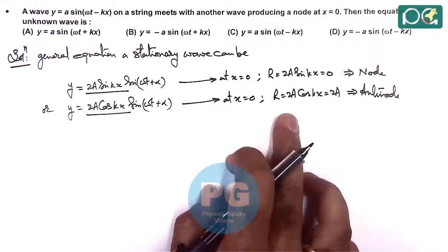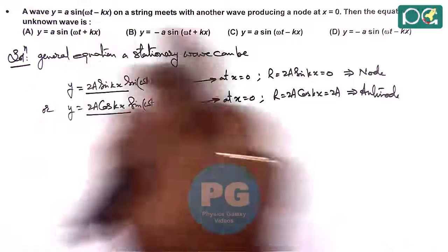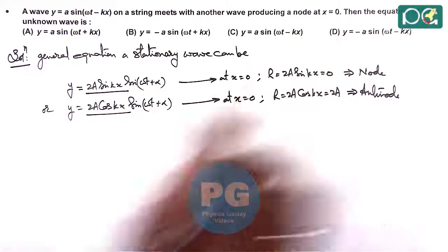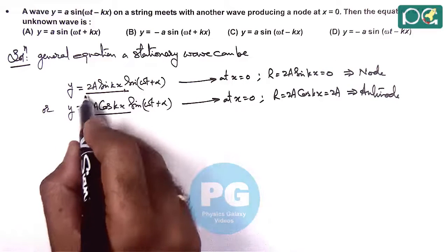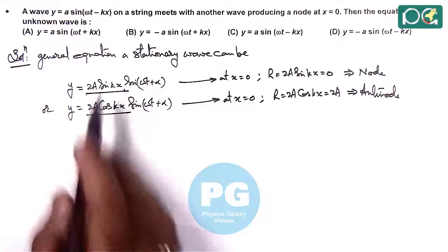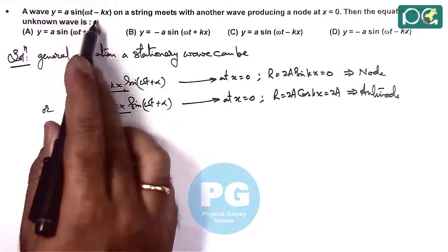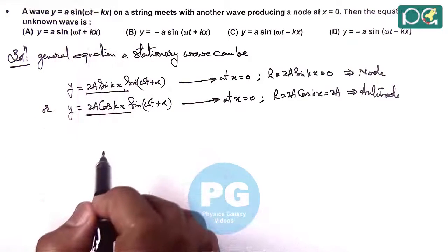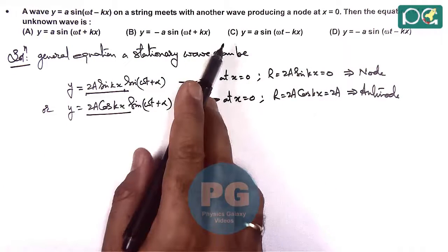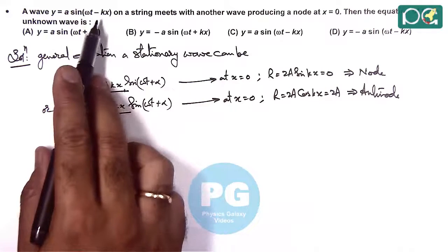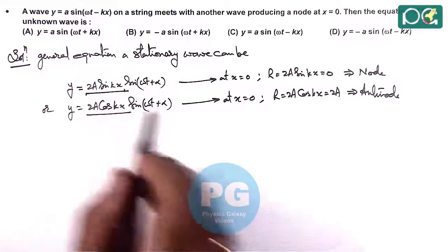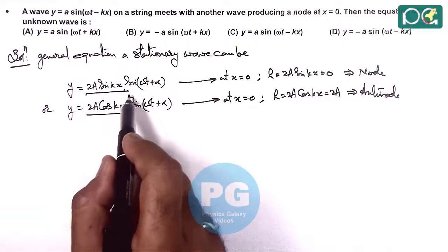So there are two possibilities, but here the question states that at x = 0 it should be a node. That means the resulting amplitude should come out to be 2a·sin(kx). One wave is given as a·sin(ωt - kx), so which wave from the options should we take so that the resulting addition has the term 2a·sin(kx)?